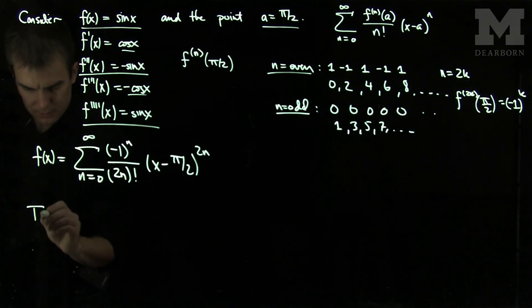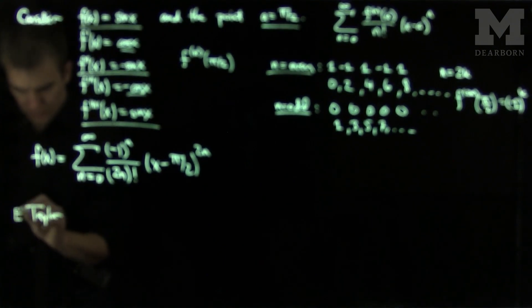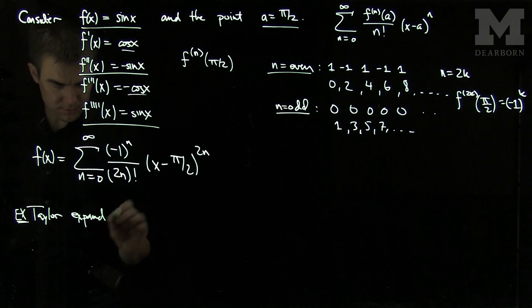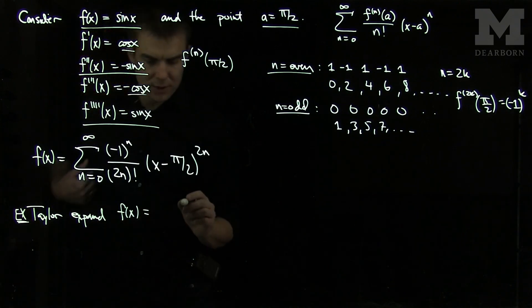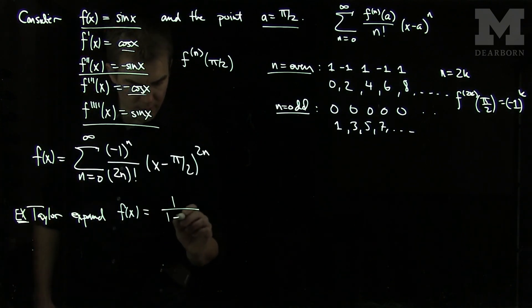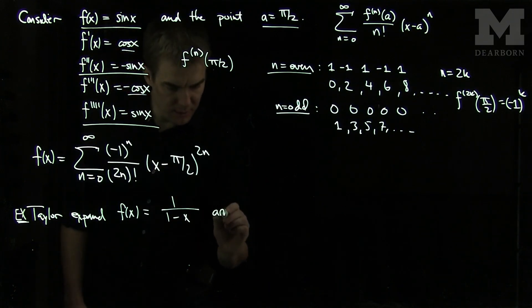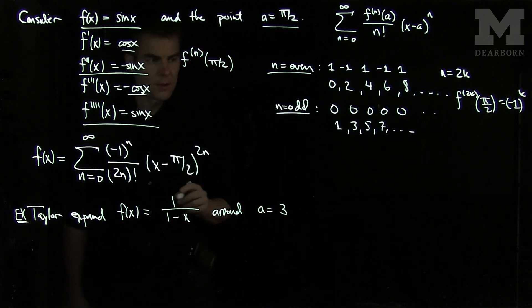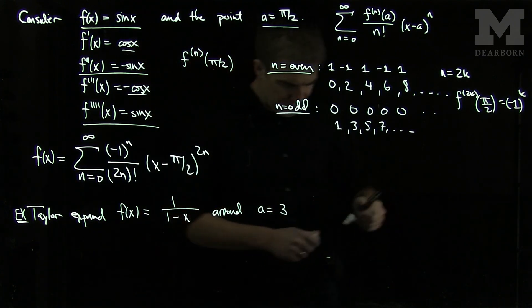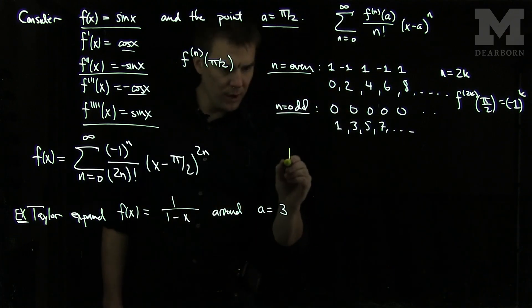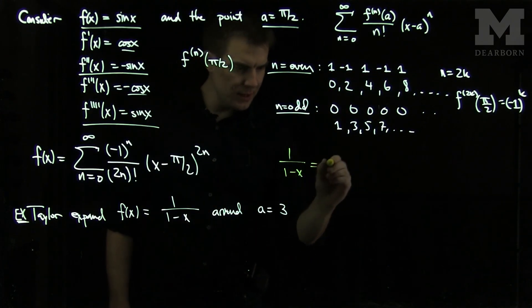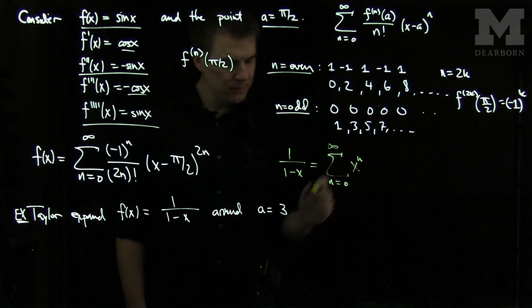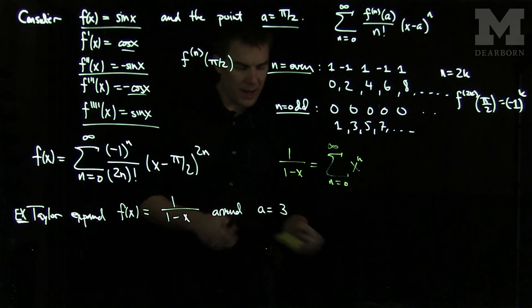Let's Taylor expand f(x) = 1 over (1 minus x) around a equals 3. We know that 1 over (1 minus x) is the sum from n=0 to infinity of x to the n. We can use an algebraic trick here.